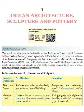Material used: Architecture uses a mixture of various types of materials like stone, wood, glass, metal, sand, etc. A single piece of sculpture is usually made of a single type of material.